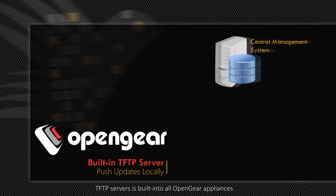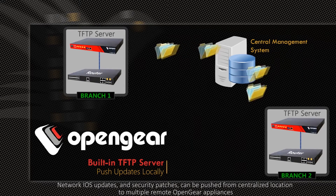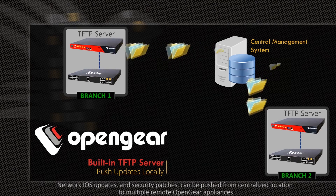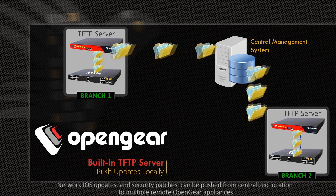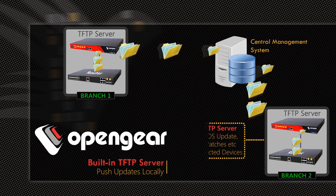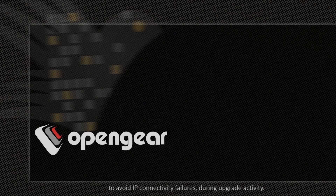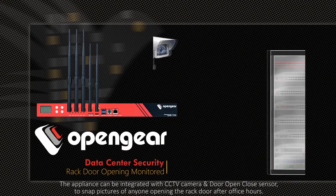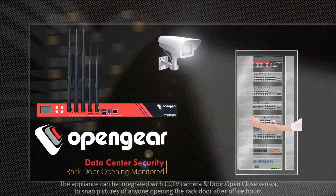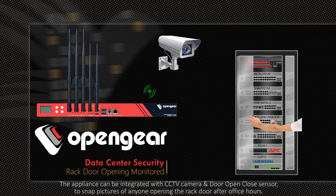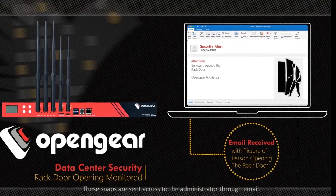A TFTP server is built into all Open Gear Appliances. Network IOS updates and security patches can be pushed from a centralized location to multiple remote Open Gear Appliances to avoid IP connectivity failures during upgrade activity. The appliance can also be integrated with CCTV cameras and door sensors to snap pictures of anyone opening the rack door after office hours, and these snapshots are sent to the administrator via email.